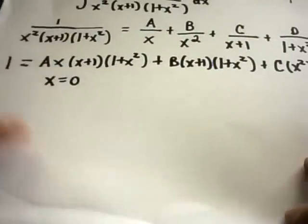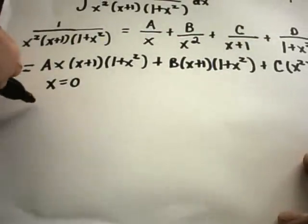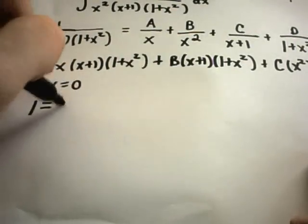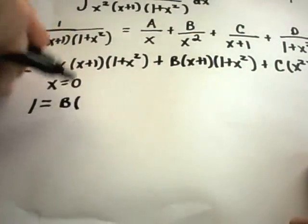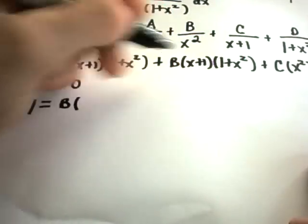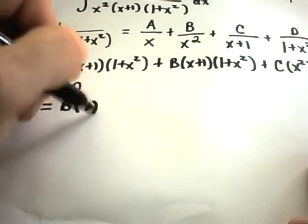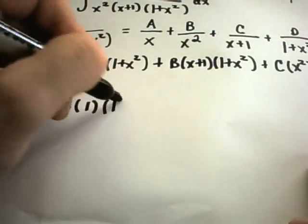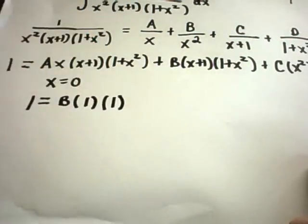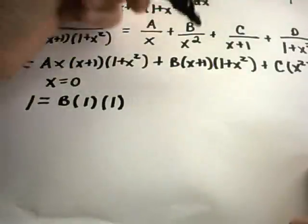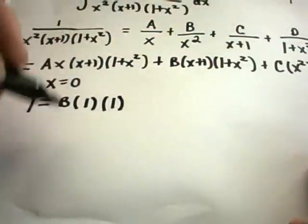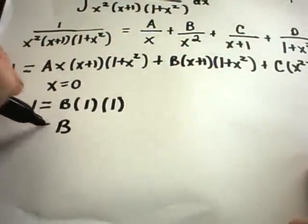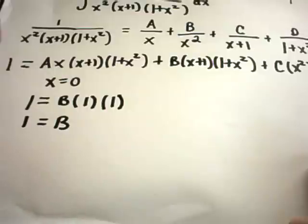If we plug in 0 on the left side, we simply get 1. Our a term cancels and we're only left with our b term. Plugging in 0 gives 1 times (1 plus 0 squared), which is 1 times 1, so b equals 1.